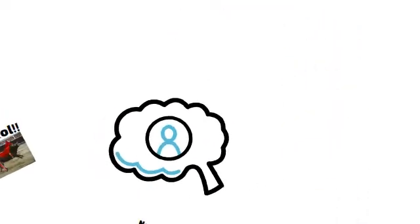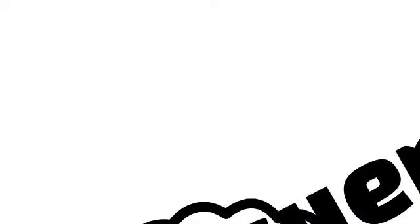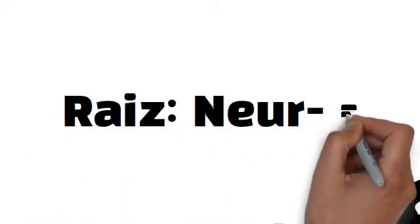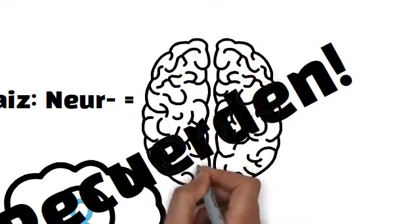y neurulación, proceso neural. Es importante recordar que la palabra que contenga o inicie con la raíz neur se relaciona al sistema nervioso.